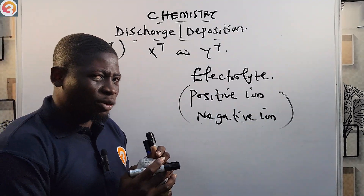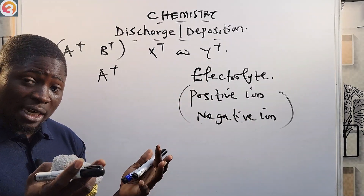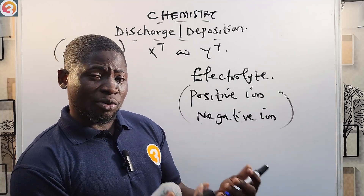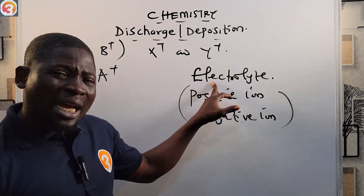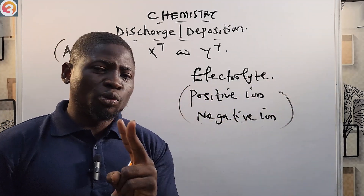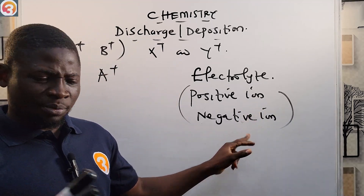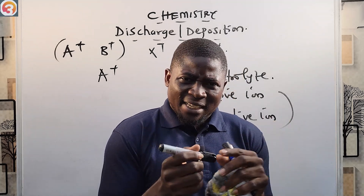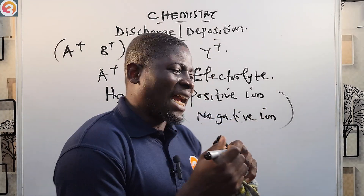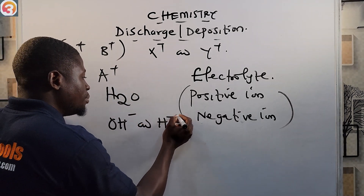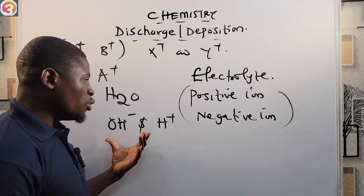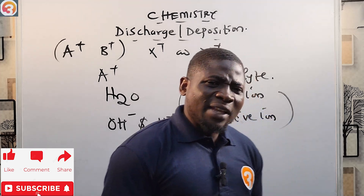During electrolysis, the electrolyte — which is a substance that is split during electrolysis — splits into positive ions and negative ions. Also, the water that the substance is dissolved in, H₂O, is theorized to exist as H-plus and OH-minus.